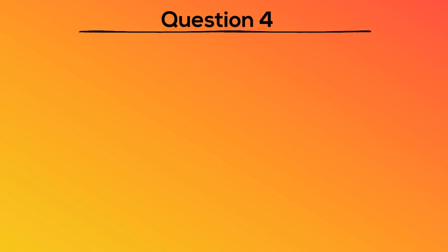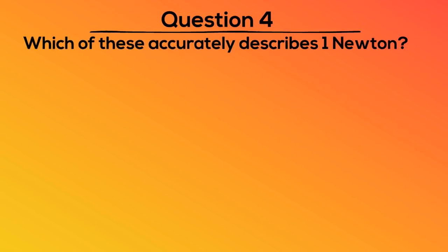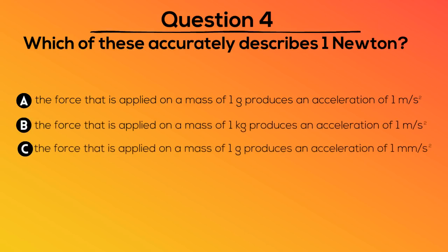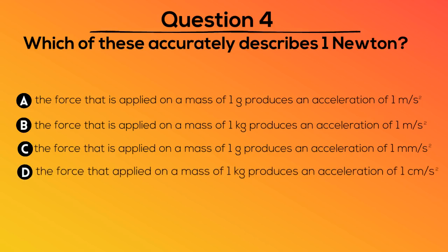Question 4. Which of these accurately describes 1 newton? A. The force that is applied on a mass of 1 gram produces an acceleration of 1 meter per second squared. B. The force that is applied on a mass of 1 kilogram produces an acceleration of 1 meter per second squared. C. The force that is applied on a mass of 1 gram produces an acceleration of 1 millimeter per second squared. D. The force that is applied on a mass of 1 kilogram produces an acceleration of 1 centimeter per second squared.